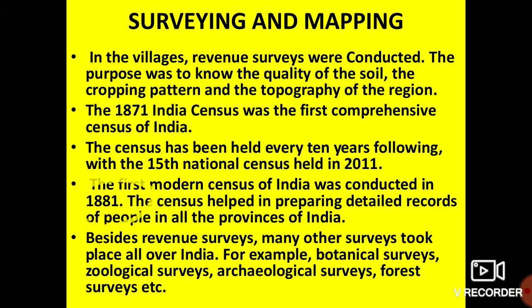The first modern census of India was conducted in 1881. The Census of India helps in creating a detailed record of the people in all the provinces of India and collects data about the population of the country. Beside revenue surveys, many other surveys were also done by the British all over India: botanical survey, geological survey, archaeological survey, and forest survey.